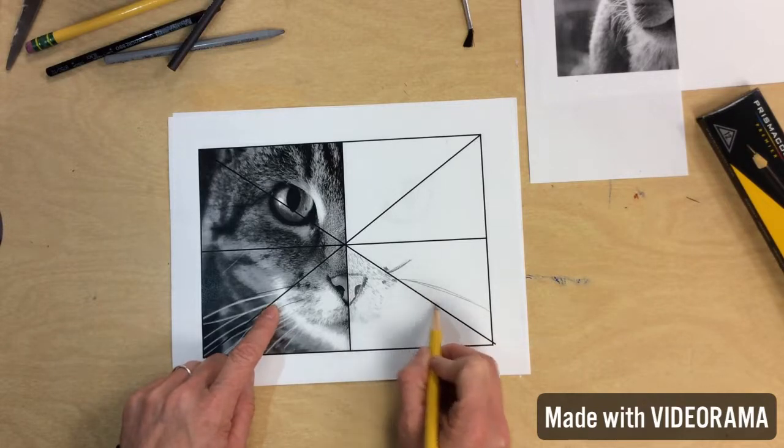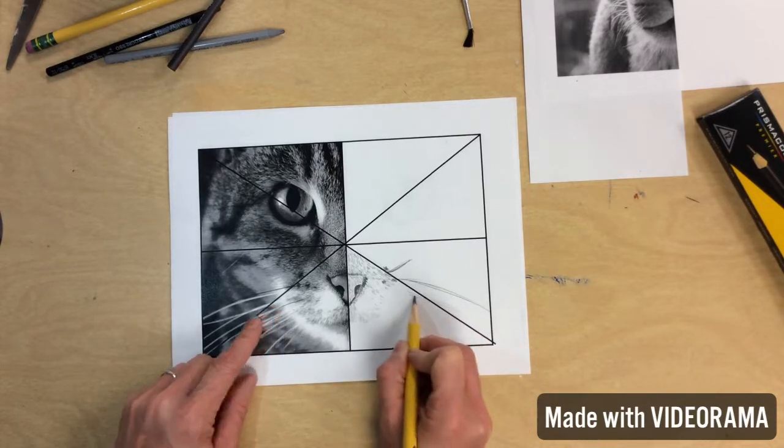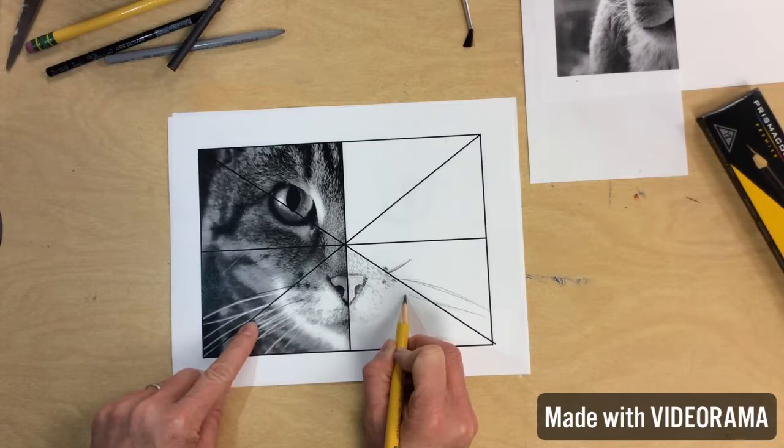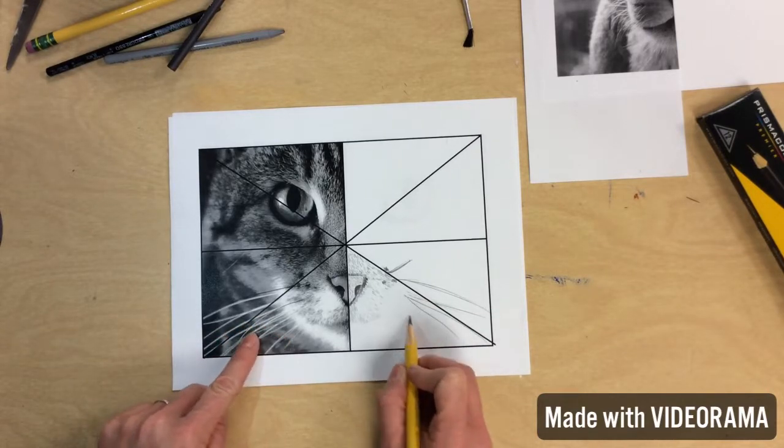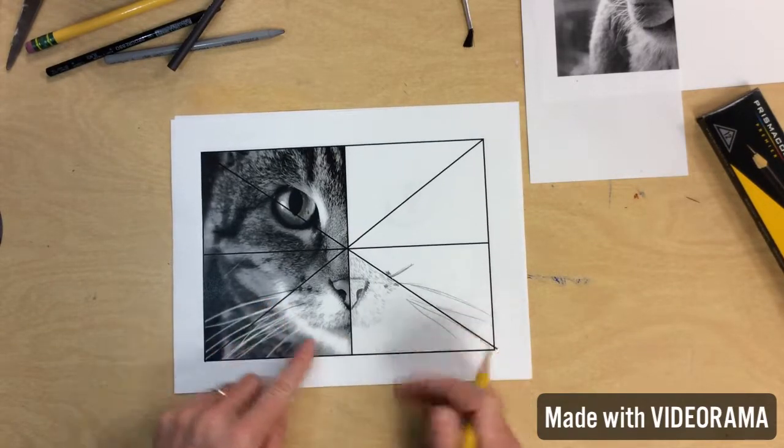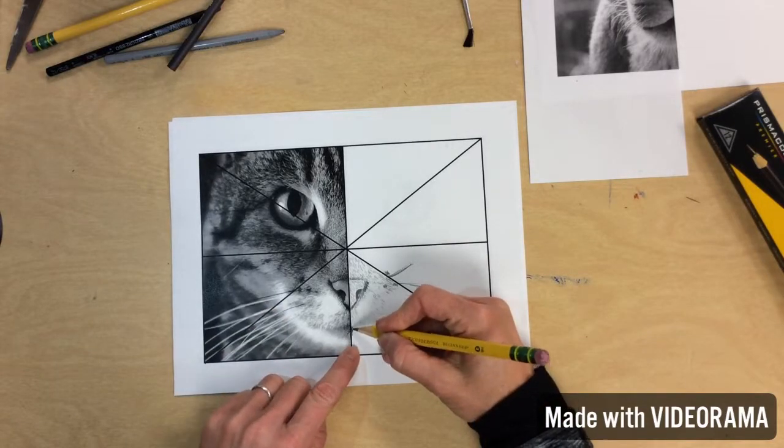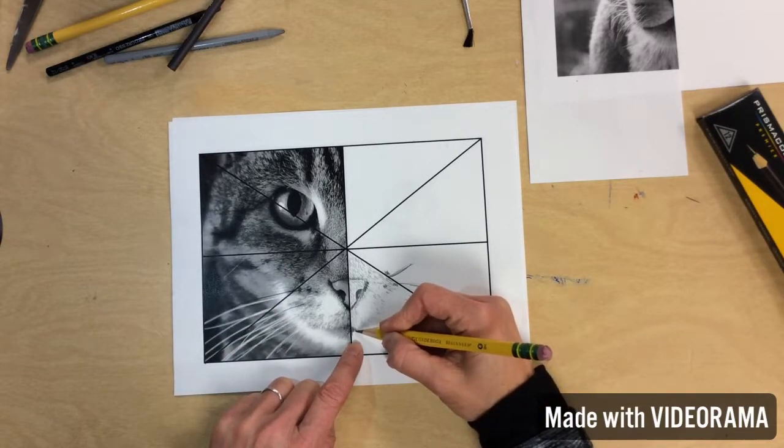These whiskers, if you look, are actually white. And they're going different directions. They're coming off the edge. And then this pattern, see where it's darker here?